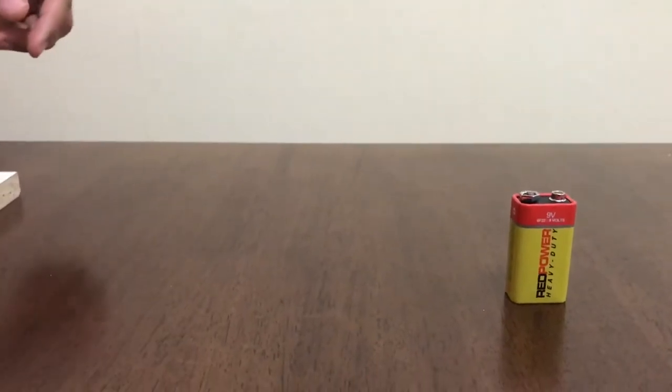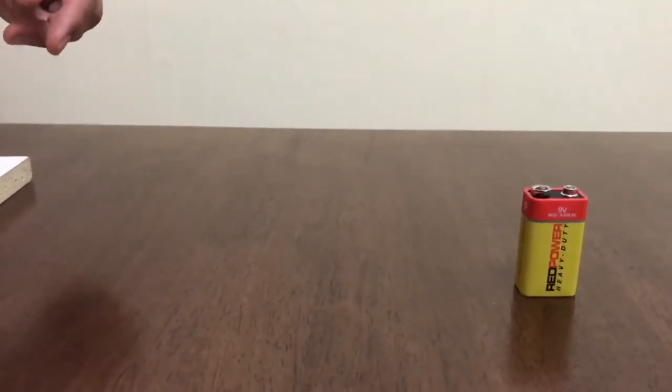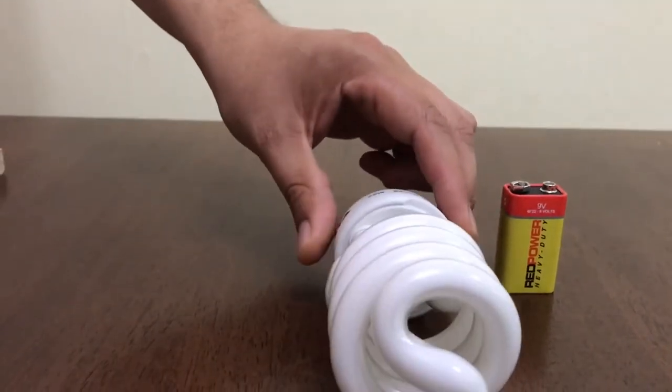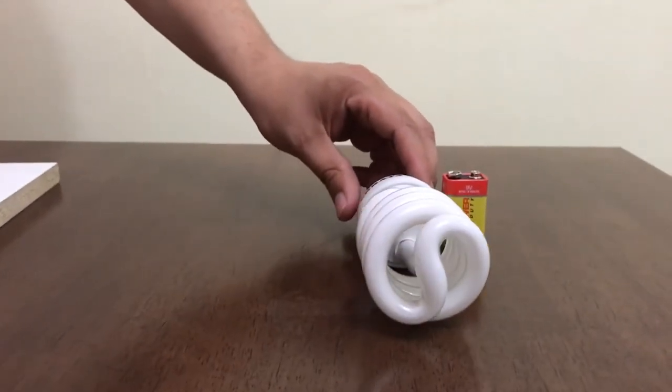Estos son los materiales para construcción de una mini bobina Tesla. Tenemos una batería de 9V. Acá tenemos una ampolleta de horno energético de 75W de potencia.